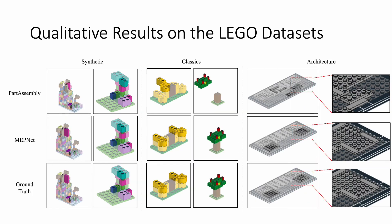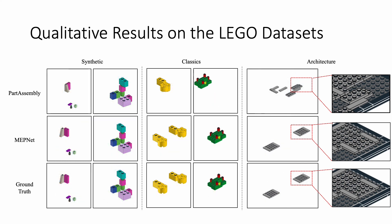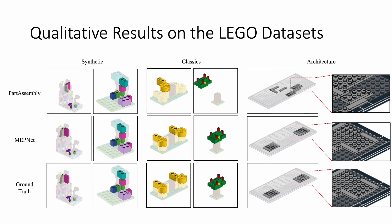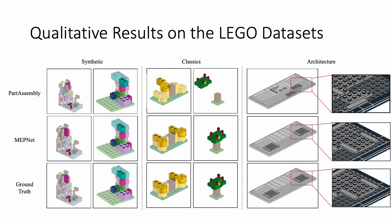We then show the qualitative results of a single-step prediction of our model and the baseline on three datasets. MEPNet is able to accurately predict 3D poses of both primitive bricks and submodules, even in cases with significant occlusions. Baseline models tend to either have a small deviation in 3D translation or fail to infer the orientation.